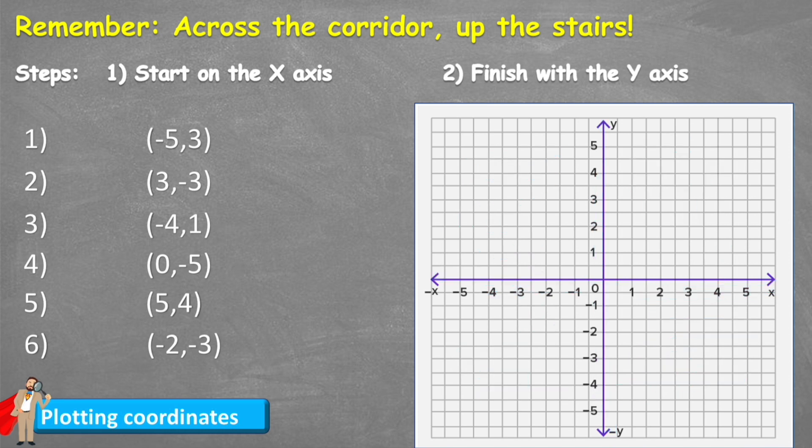And then the second thing to understand is which axis is actually which. So we can see this horizontal axis, this is called the X axis, and the vertical axis is called the Y axis.